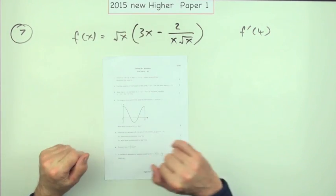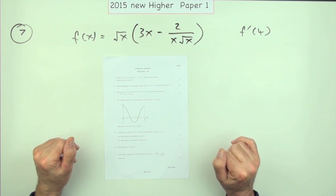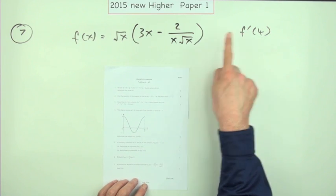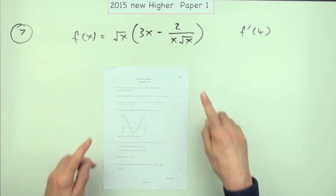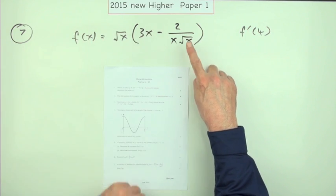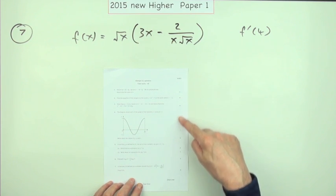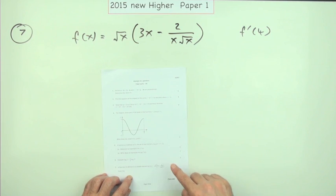Number seven from the 2015 new Higher Paper 1, a four-mark question finding the value of a derivative of some expression involving roots and denominators. So far they've all been really straightforward, this is maybe the first one that gets a wee bit tricky.